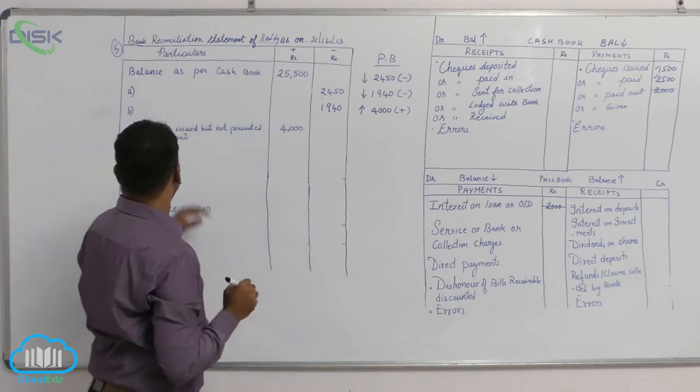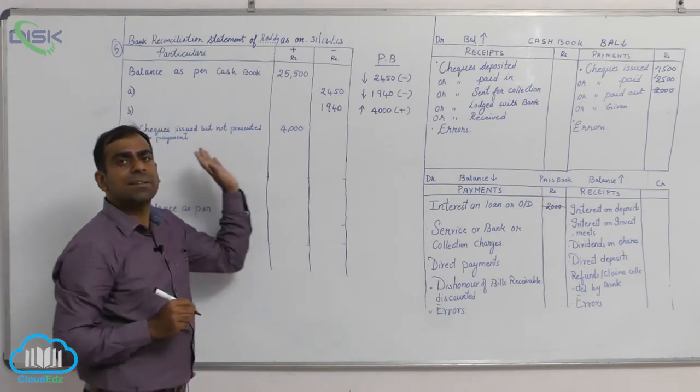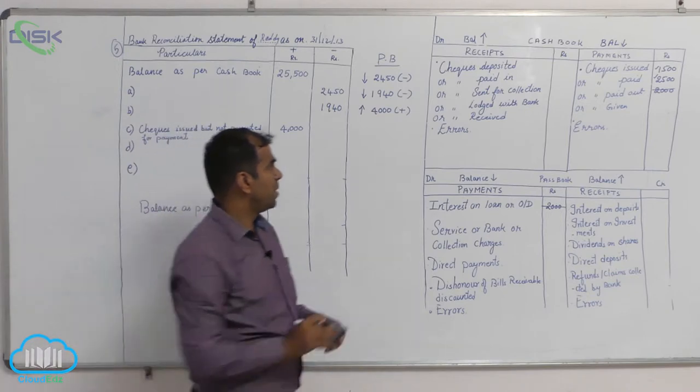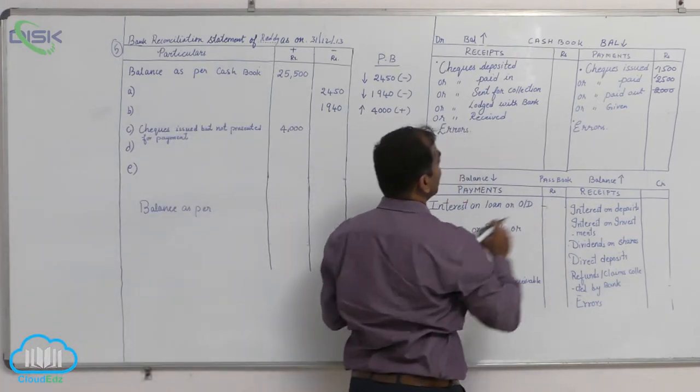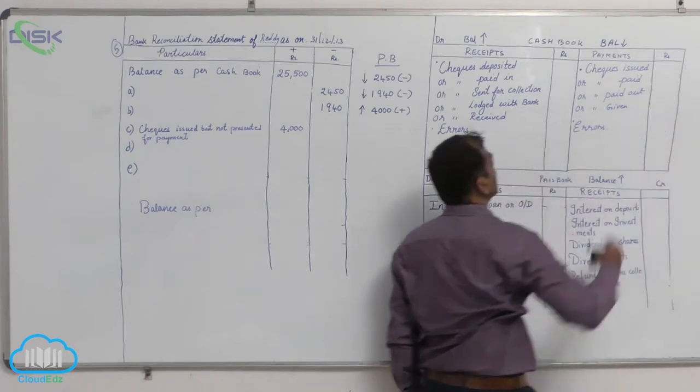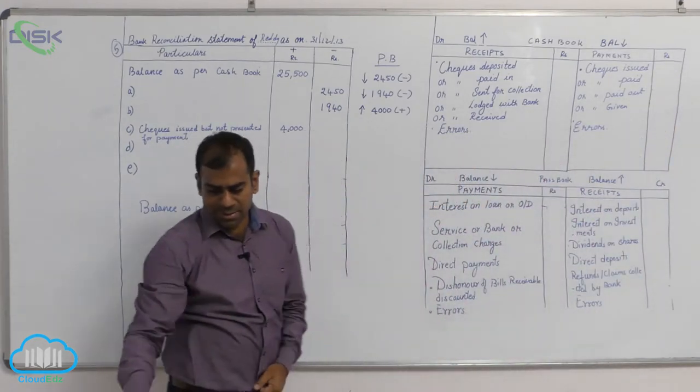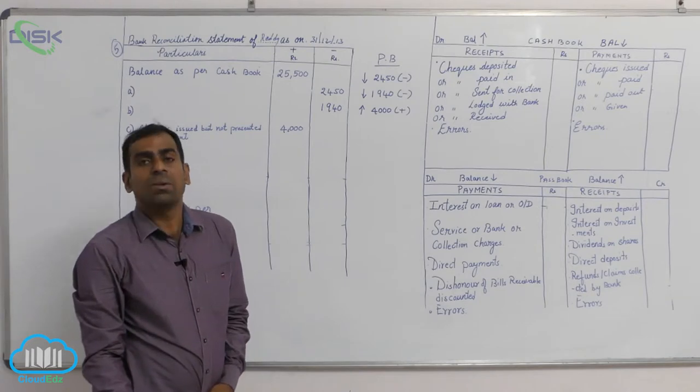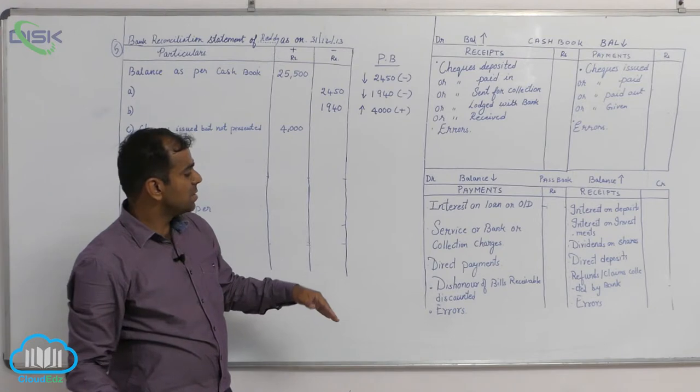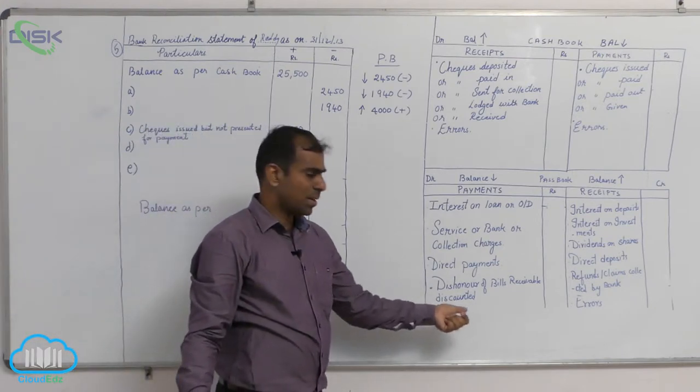Now that is how you treat your transaction C. Now moving on to transaction D. Before we move I'll remove these amounts to avoid confusion. Next it states that bill discounted got dishonored. Look for where is dishonor of bill receivable discounted - here it is an entry in the passbook.